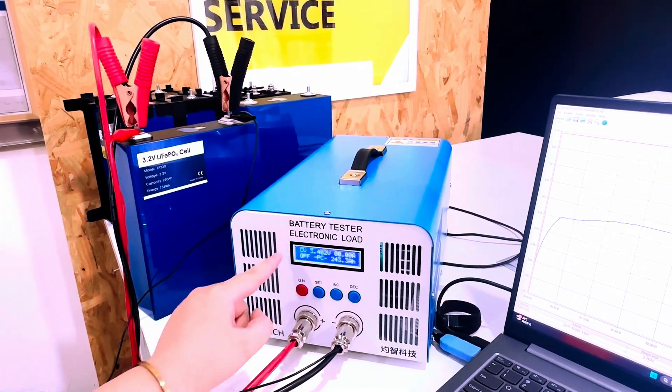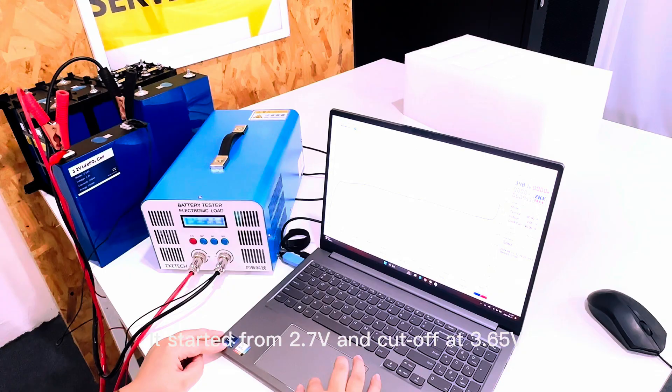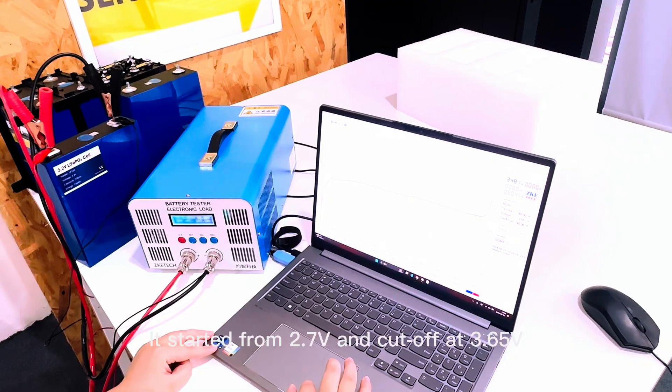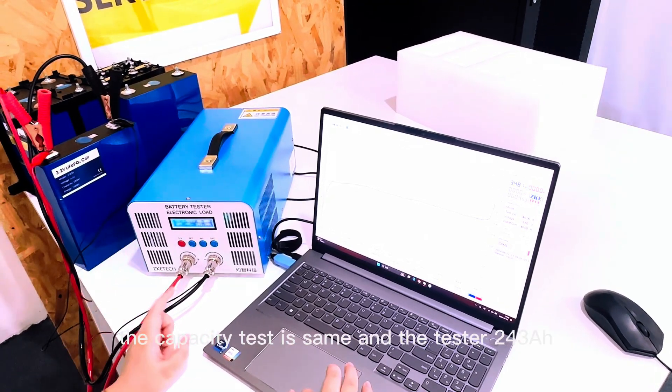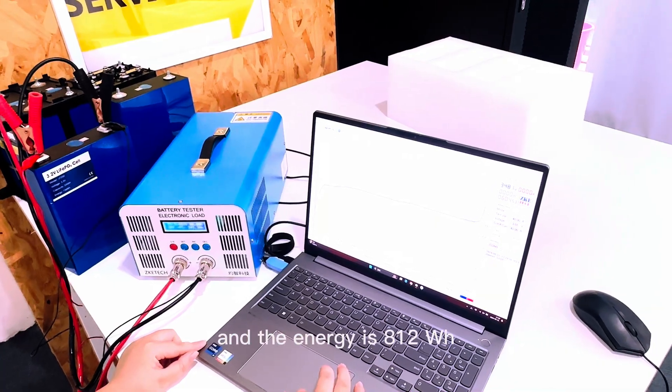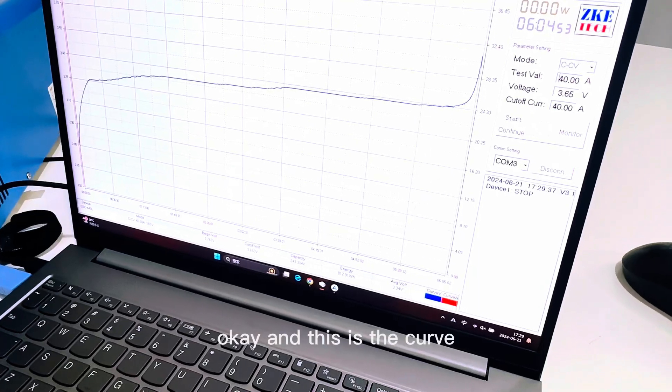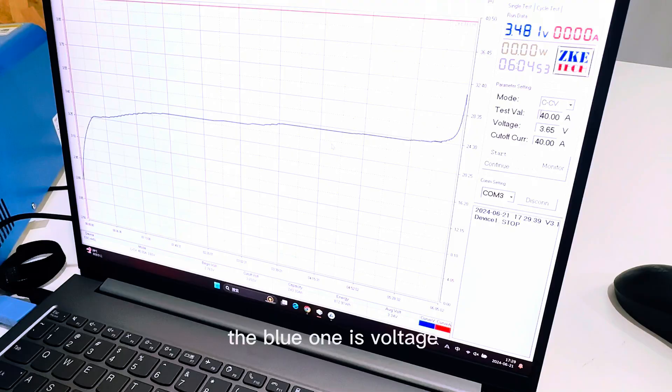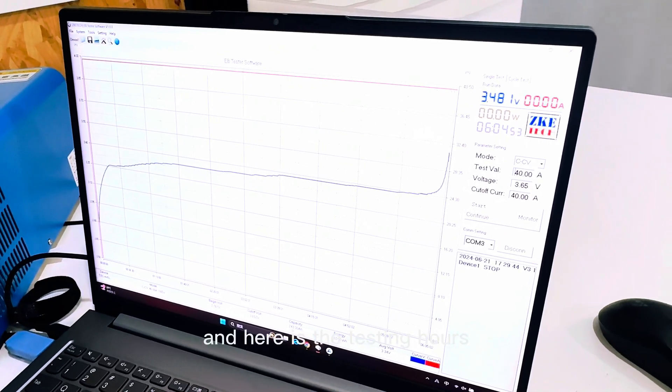And it turned off around one hour ago. So from 2.7V and cut off at 3.65V, the capacity test is the same as the tester, 243. And the energy is 812 watt-hours. And this is the curve. The blue one is voltage, and the red one is constant current amps. And here is the testing hours.